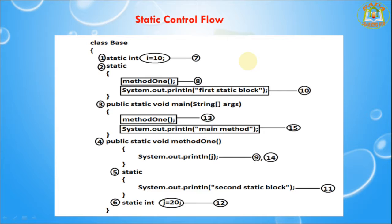In this case, the compiler checks first the identification of the static member from parent to child. After that, execution of the static variable assignments and static blocks from parent to child. Finally it executes the child class main method.